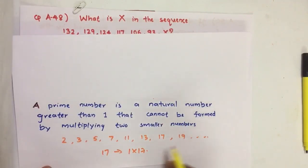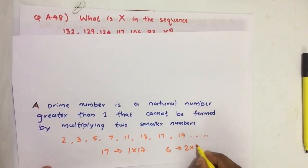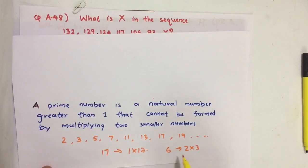Another example: 6. 6 we can make as 2 into 3. So here we could multiply two smaller numbers to make another natural number, so it is not a prime number.